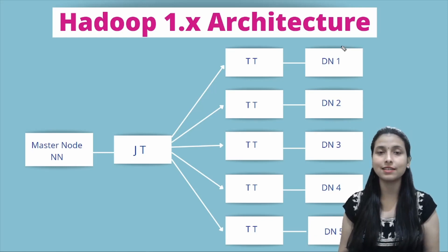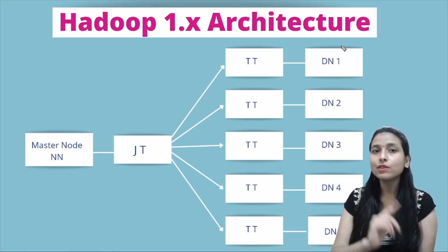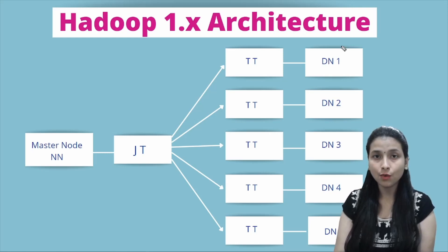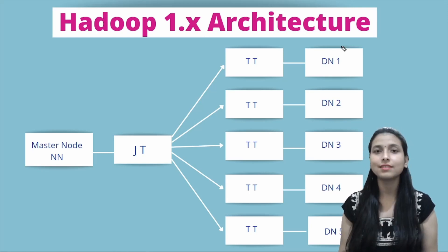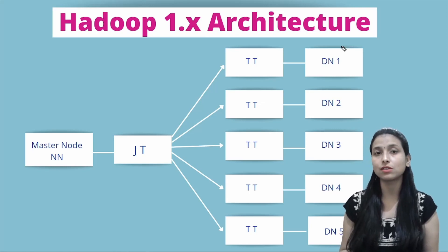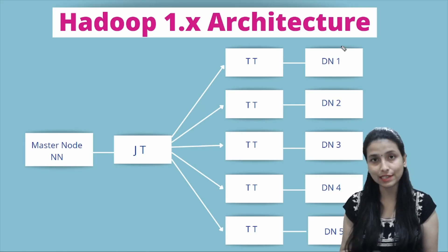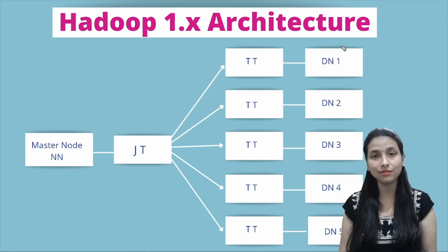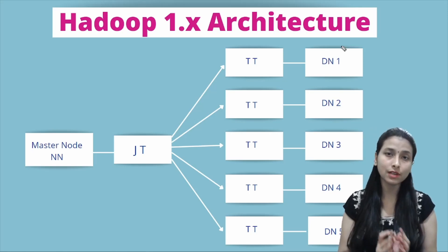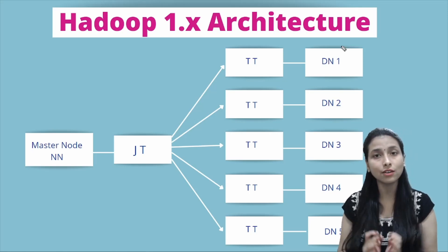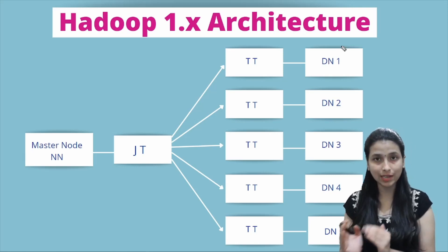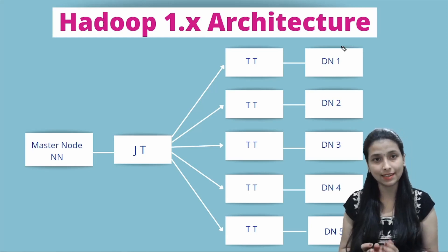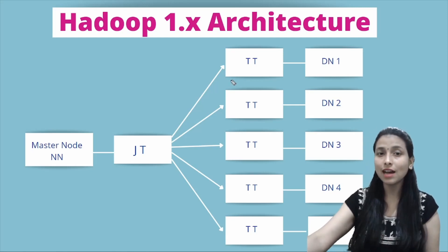Here we will be majorly focusing on Hadoop 1.x architecture, and going forward we will also cover Hadoop 2.x and Hadoop 3.x architecture. The first thing you need to understand is why Hadoop came into existence. The data being generated was of huge volume, high variety, and high velocity, so there was a need for something to store that kind of data — and that's where Hadoop came into existence.